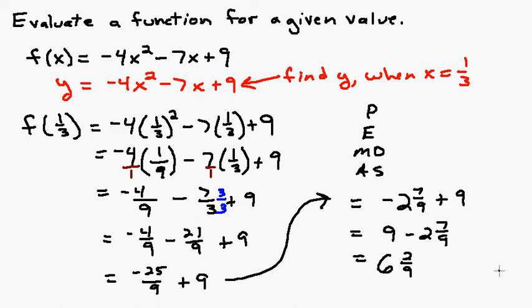Let me show you this other way that you can do it. I could keep the twenty-five ninths and then change the nine into ninths, which would be eighty-one ninths. Eighty-one divided by nine is nine. And then do negative twenty-five plus eighty-one on the top, which is the same as eighty-one take away twenty-five, which is fifty-six over nine. And of course fifty-six over nine is the same as six and two ninths. So you could do it either way with the fractions.